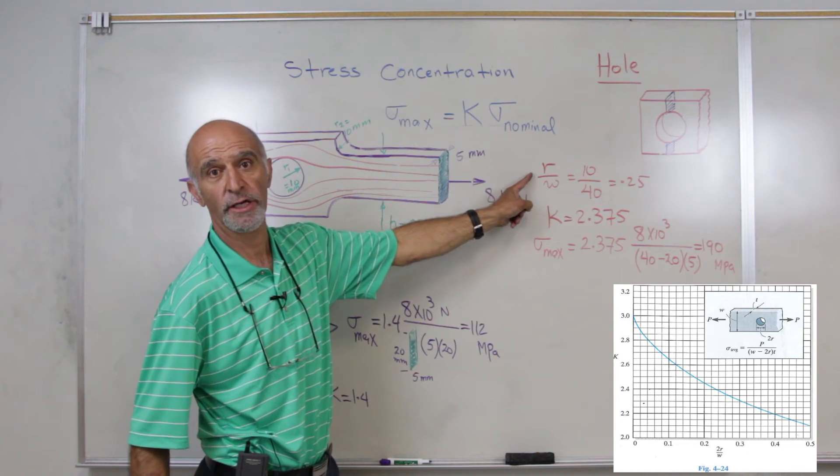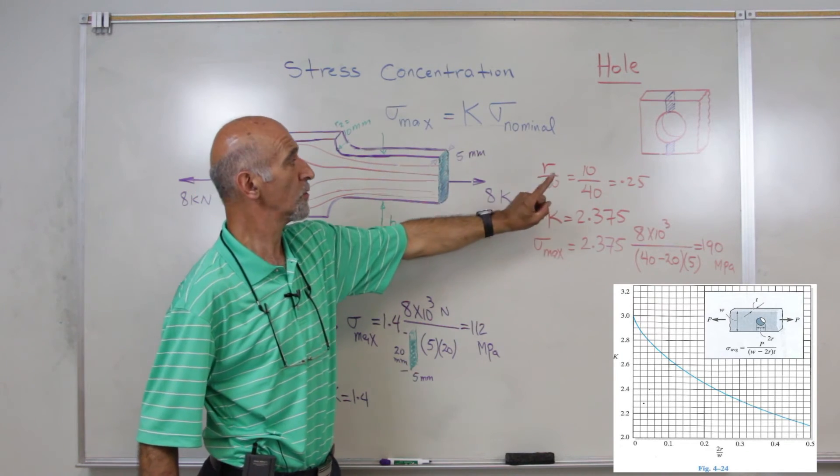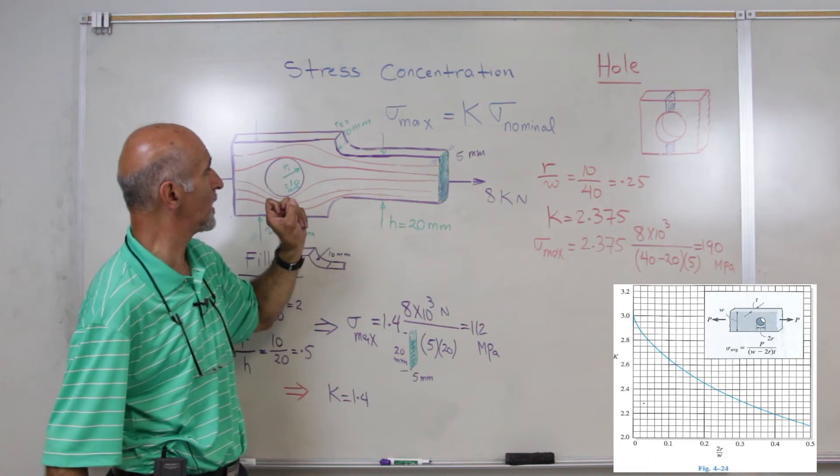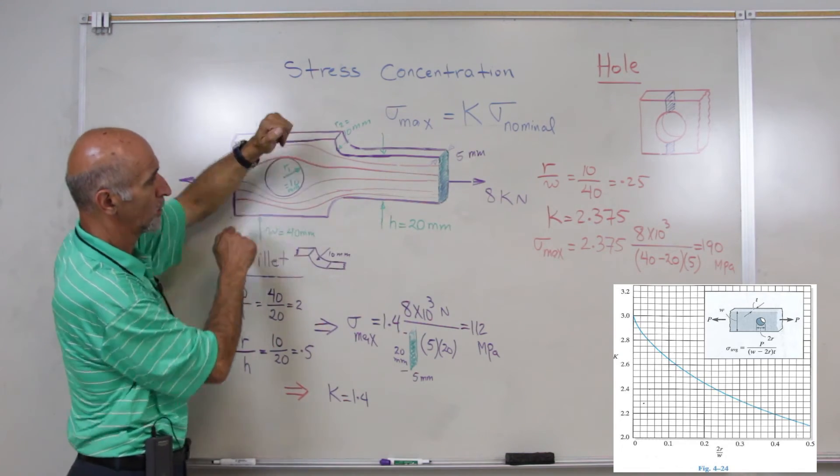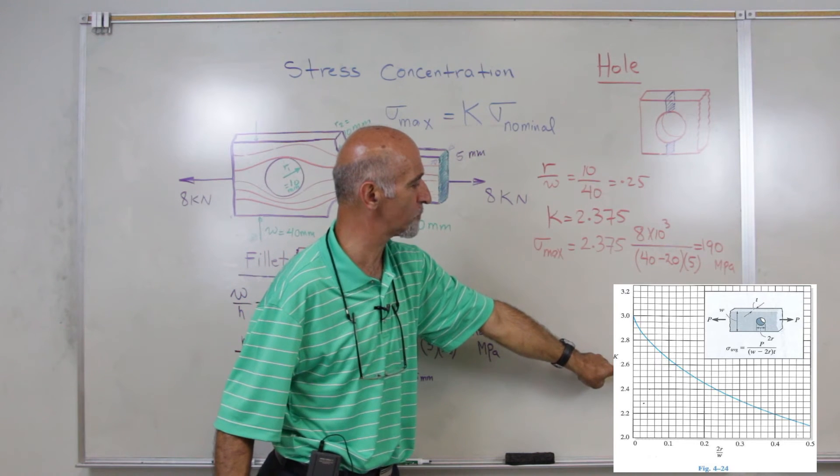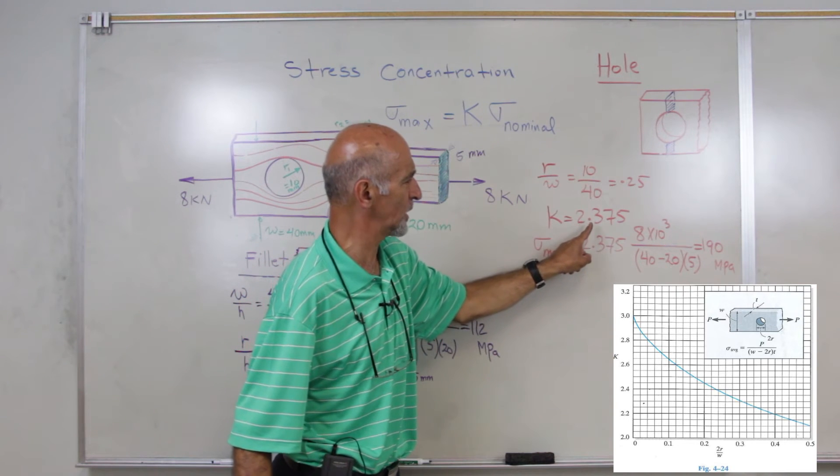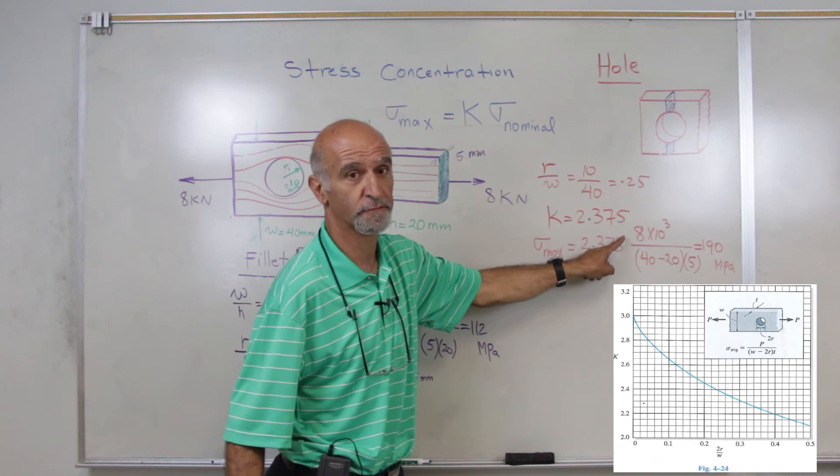we would have to calculate R over W, which, R is 10, and W is 40. And that factor from this graph approximately comes out to be 2.375.